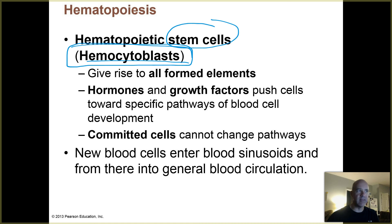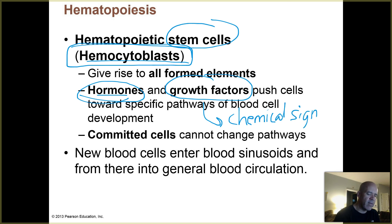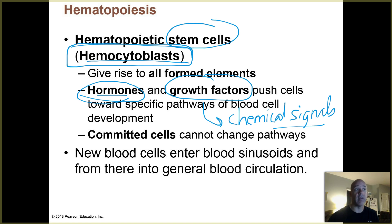How do these hemocytoblasts know what to turn into? It's based on hormones — there are signals sent to the bone marrow. For example, we'll talk about a hormone called EPO, which causes more red blood cells to develop. There are also various growth factors, which are chemical signals much like the hormones of your immune system, that signal different types of white blood cells or platelets to develop. Depending on what your body needs — more neutrophils, more platelets — different signals are sent to the red bone marrow to cause more cells to develop along those pathways.